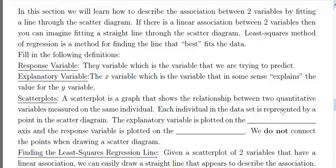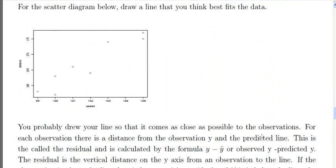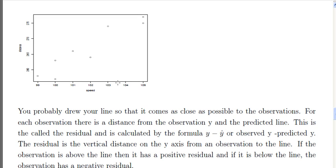The explanatory variable is the variable that in some sense explains the value for the Y variable. For our example, we can look at the scatter plot, and we have speed down here on the X axis and distance on the Y. Those are a little hard to read.